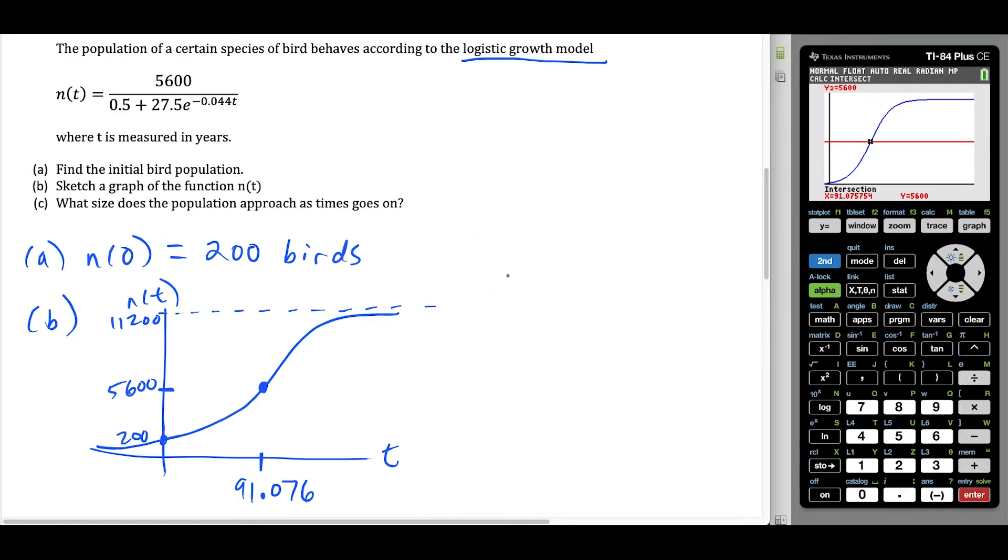This is a decent enough sketch that models the function. It includes all the significant values, it has the maximum height, it has the halfway point on the y and the x axis, and it has the initial population here. So the last question is looking at what size does the population approach as time goes on? Well, as time goes on, we see here that the maximum height that we're approaching is 11,200 birds. This is the cutoff in the population. So we could see here that up until about 91 years, the rate of change of this curve is increasing. So the population is increasing at a faster rate, but then at about this time is when the population starts to slow down.